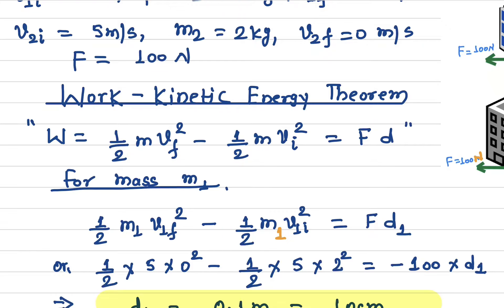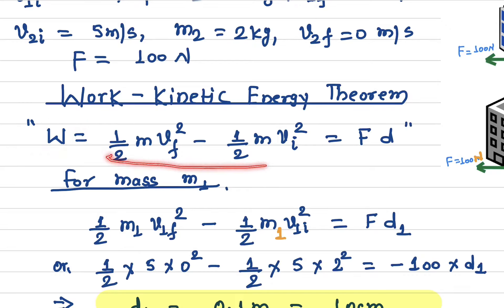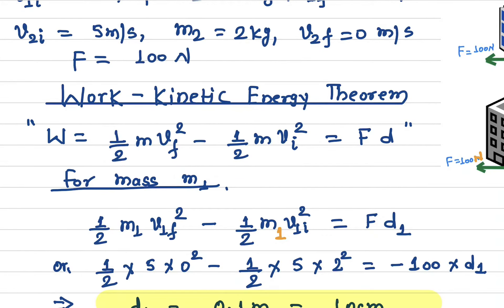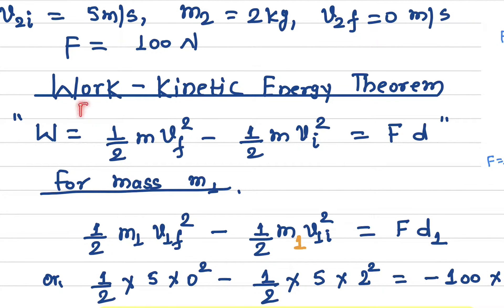The work-energy theorem tells you that the amount of work done — where W stands for work done — is exactly equal to the change in kinetic energy. This is the final kinetic energy minus the initial kinetic energy. So final KE minus initial KE gives you the total amount of work done.